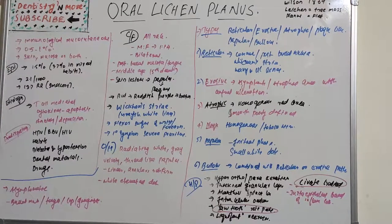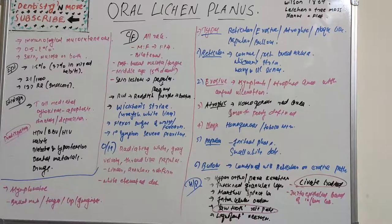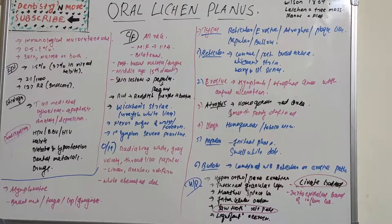It was first described by Wilson in 1869. It affects around 0.5 to 1 percent of the whole population. The condition can affect either the skin, mucosa, or both, and it causes bilateral white striations, papules, or plaques on the buccal mucosa, tongue, and gingiva.